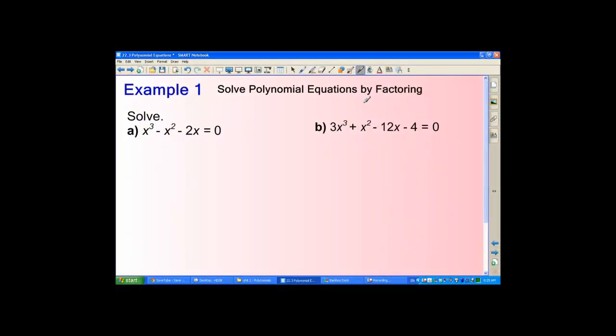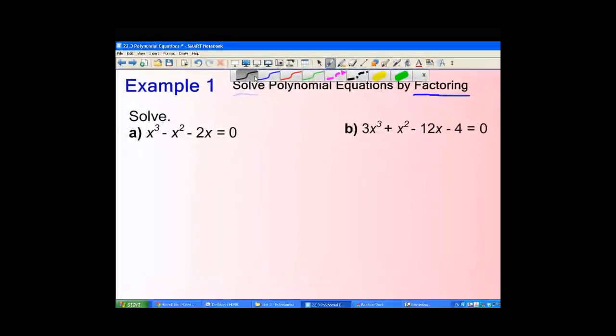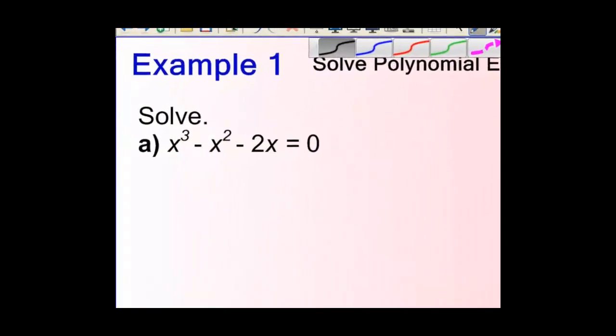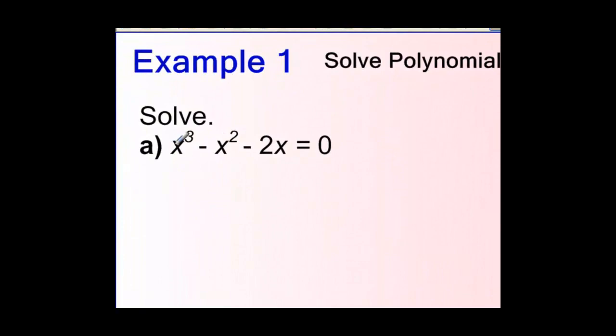So, let's look at two examples where we have polynomial equations that are of degree 3, so these are cubic equations, and we're being asked to solve them by factoring. If I take a look at part A, I should be able to identify that there's a common factor that I can pull out right away. There's a common factor of x that I can factor out of all my terms right off the bat.